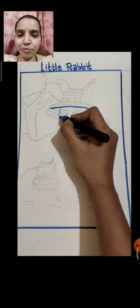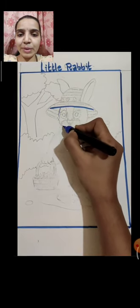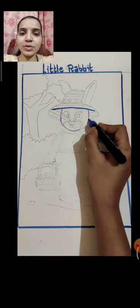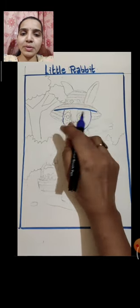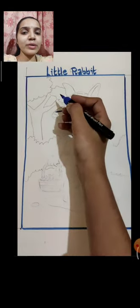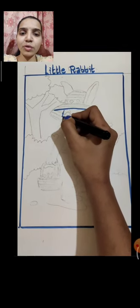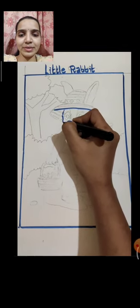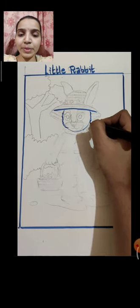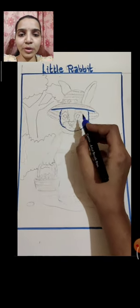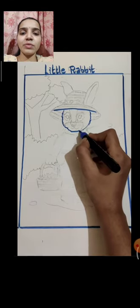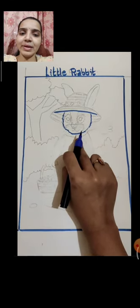Then we will make the face of the rabbit. I am showing the first basic line of the face - that is a U shape. On this U shape basic line we have to give a texture of zigzag lines, because the rabbit has many hairs on its body and face. So we will show this zigzag texture on the face line.